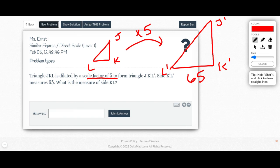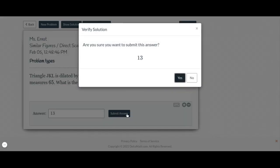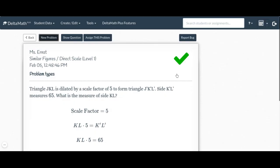And I know that KL was 65. So on this one, I'm going to work backward, because I want to know what KL was. So I'm going to take 65 divided by 5 in order to get our answer. And 65 divided by 5 is 13, so our answer should be 13.